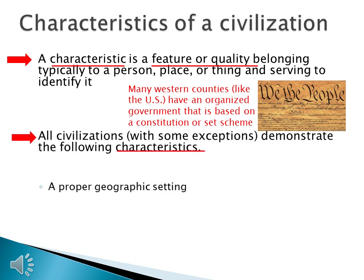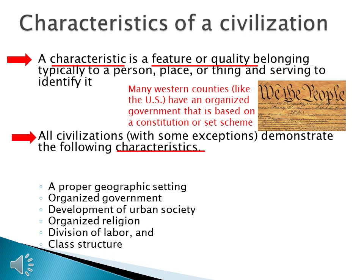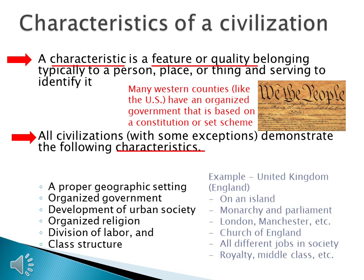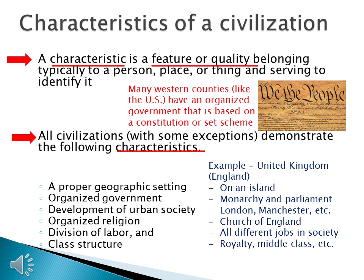What are some other characteristics? Proper geographic setting, organized government, development of urban society, organized religion, and division of labor and class structure. To get examples of each, we're going to look at England. England sits on an island — well protected — proper geographic setting. England has a monarchy, a queen, and parliament — that's an organized government. England has an urban society in many places: London, Manchester, Liverpool, Leeds. England has an organized religion called Anglicanism — there's actually a Church of England. England has division of labor with all different types of jobs. And England has the most famous class structure of all — the British monarchy: there's royalty and then there's everybody else. Those are the characteristics of a civilization.